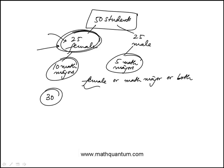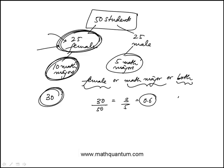30 people would satisfy this condition - female, math major, or both. The 10 here is already included in that 25. So the probability would be 30 out of 50, which is three-fifths or 0.6, answer choice C.